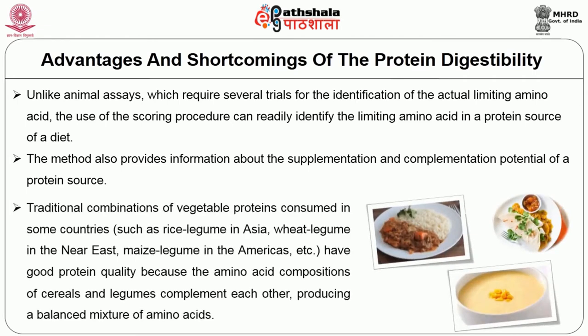Traditional combinations of vegetable proteins consumed in some countries — such as rice-legume in Asia, wheat-legume in the Near East, and maize-legume in the Americas — have good protein quality because the amino acid compositions of cereals and legumes complement each other, producing a balanced mixture of amino acids. Lysine and methionine can complement each other when taking cereal and pulse together.